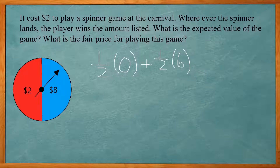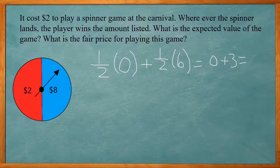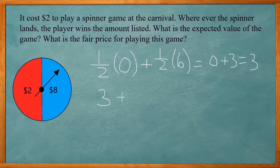So we have 1 half times 0 plus 1 half times 6, which gives us 0 plus 3, or $3. If I play this game long enough, over the long term, I expect to gain $3. Now, the fair price of playing this game is the expected value — which is $3 here — plus the cost of playing the game, which gives us $5.